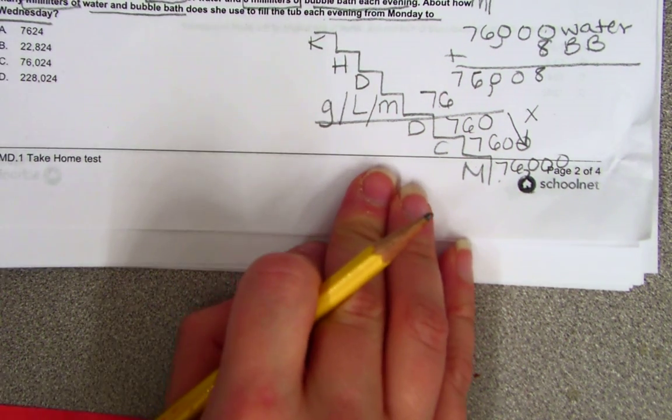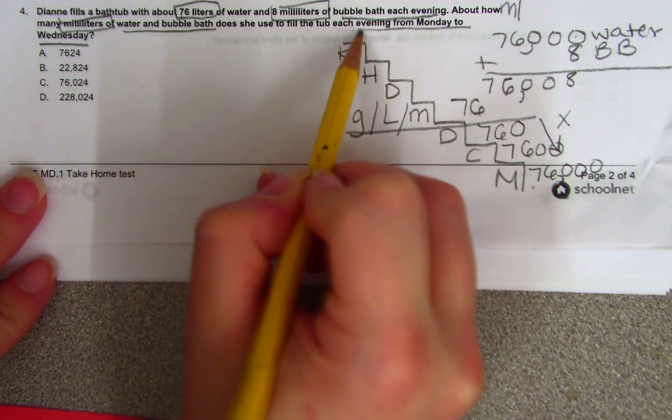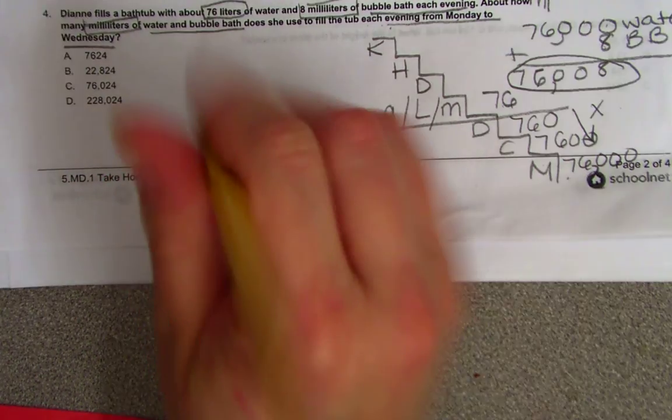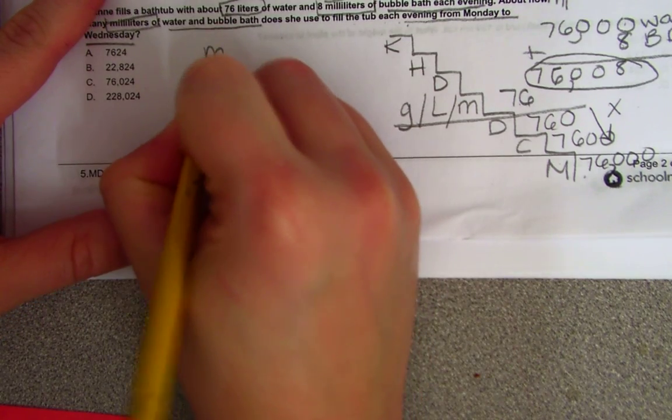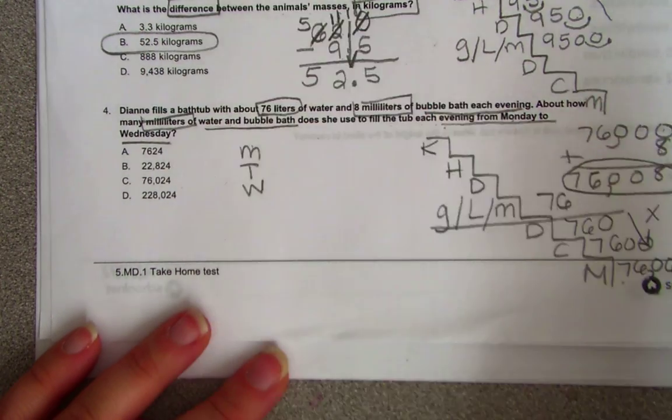Now that's just Monday. If you read the rest of the problem it says does she use to fill each night from Monday to Wednesday. So that's one night. So basically you got Monday night, you got Tuesday night, and you got Wednesday night. So when you look at that you have 1, 2, 3 nights.